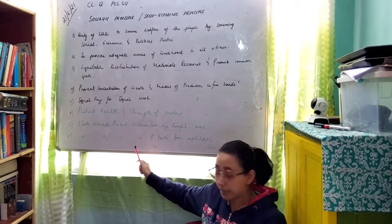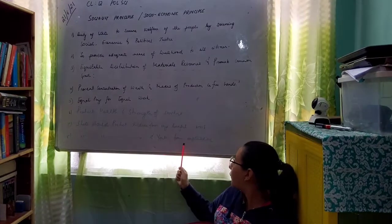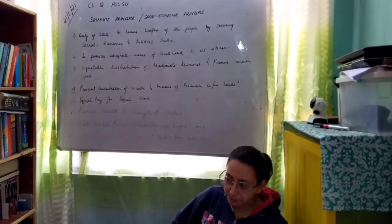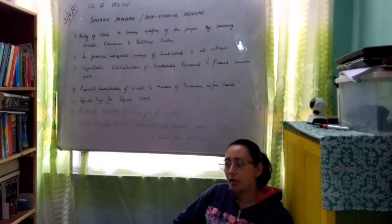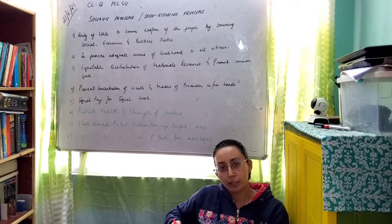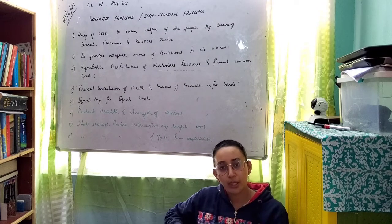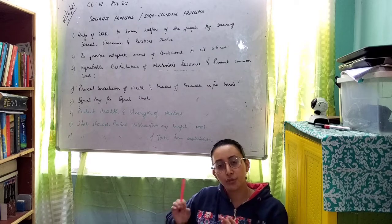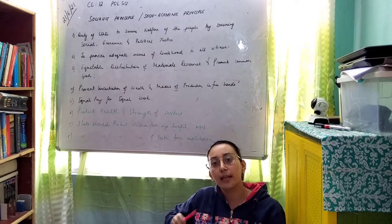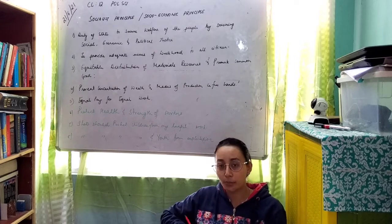Principle eight: the state should protect children and youth from exploitation. Exploitation can take numerous forms — girls are exploited, boys are exploited, and children are exploited in various ways. The government looks after this and creates certain policies to ensure that children and youth are not exploited.